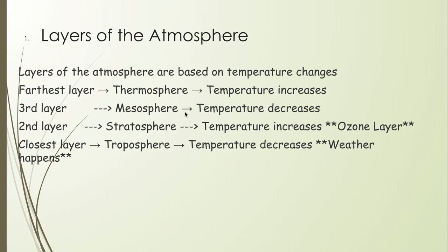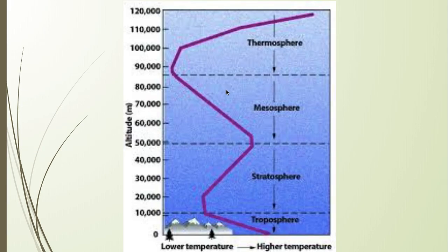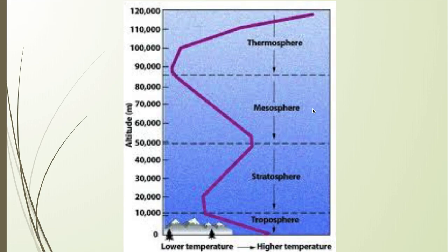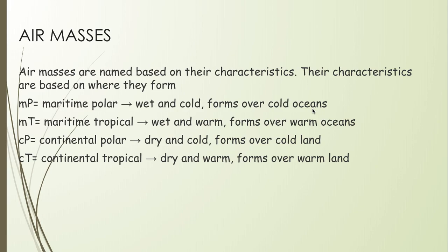So temperature goes down, up, down, up — it's a pattern. This is a graph you might see, based on temperature and altitude. In the troposphere it gets colder, in the stratosphere it gets warmer, then colder and warmer again as you increase in altitude.